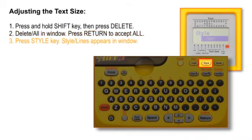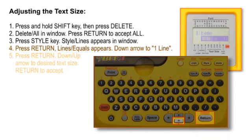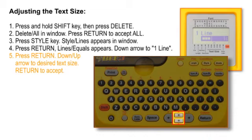Press the STYLE key. STYLE LINES appears in the window. Press RETURN and LINES EQUAL appears in the window. Press the DOWN ARROW key and one line appears. Press RETURN to accept. Use the DOWN or UP ARROW key to select the desired text size. Press RETURN to accept the desired size.